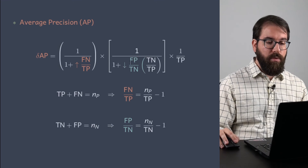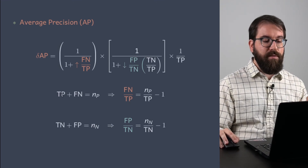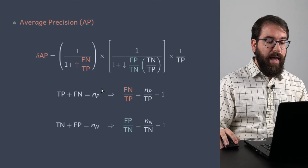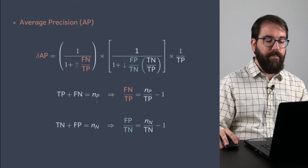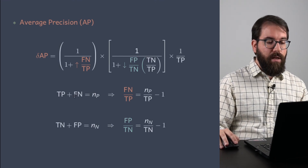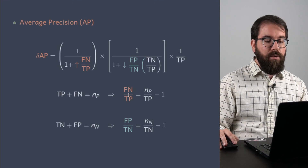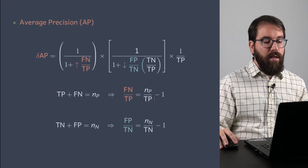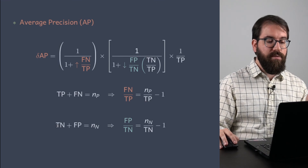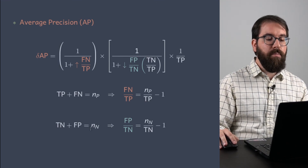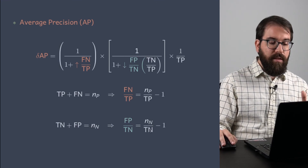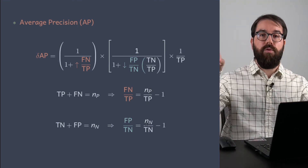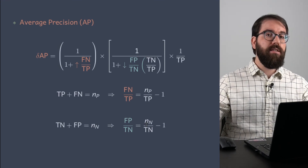The reason these ratios are independent is that true positives plus false negatives come from the same histogram and are constrained to the number of actual positives (NP). Isolating that ratio, it depends only on the number of actual positives and the number of true positives. Similarly, true negatives plus false positives are constrained by the total number of actual negatives. These two formulas are completely independent because they come from different histograms representing the distributions of actual negatives and actual positives.